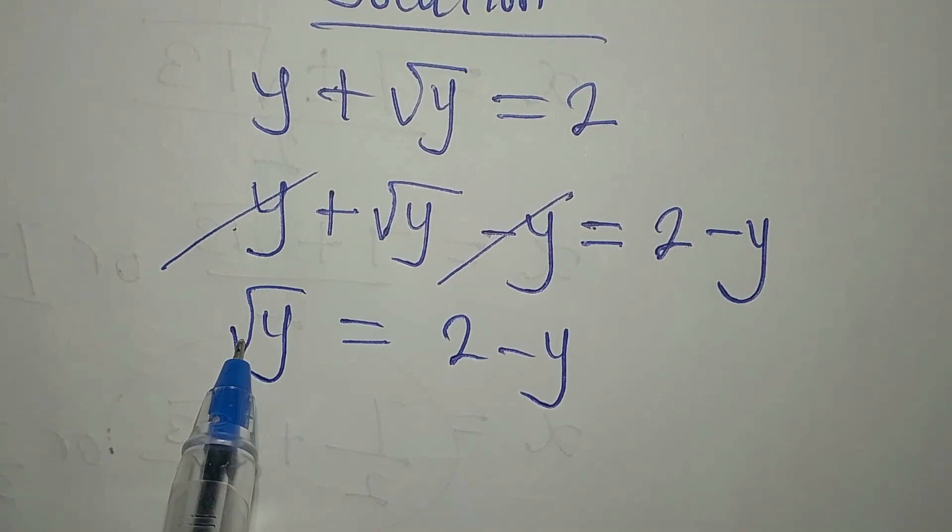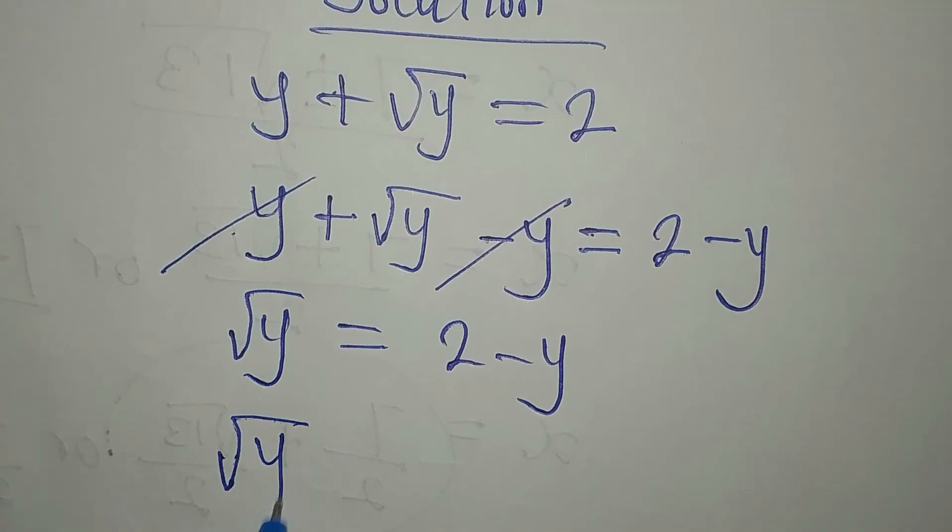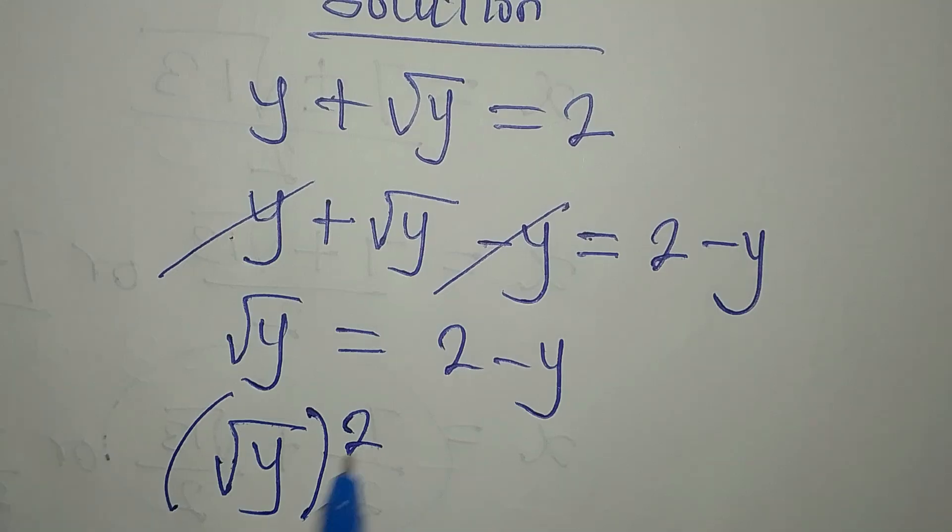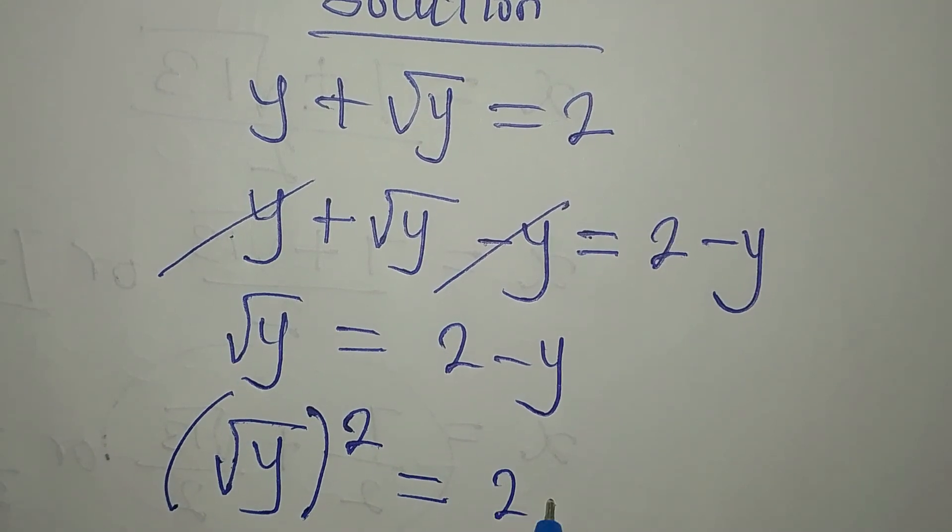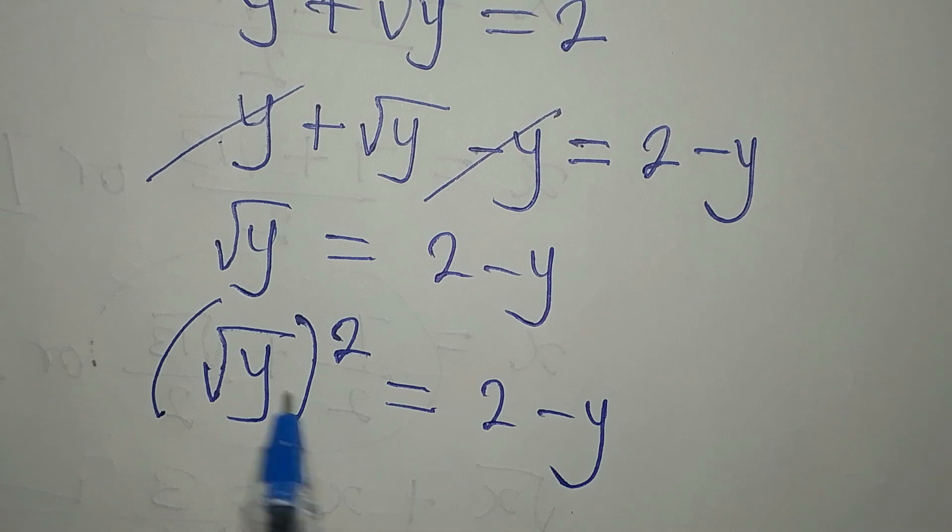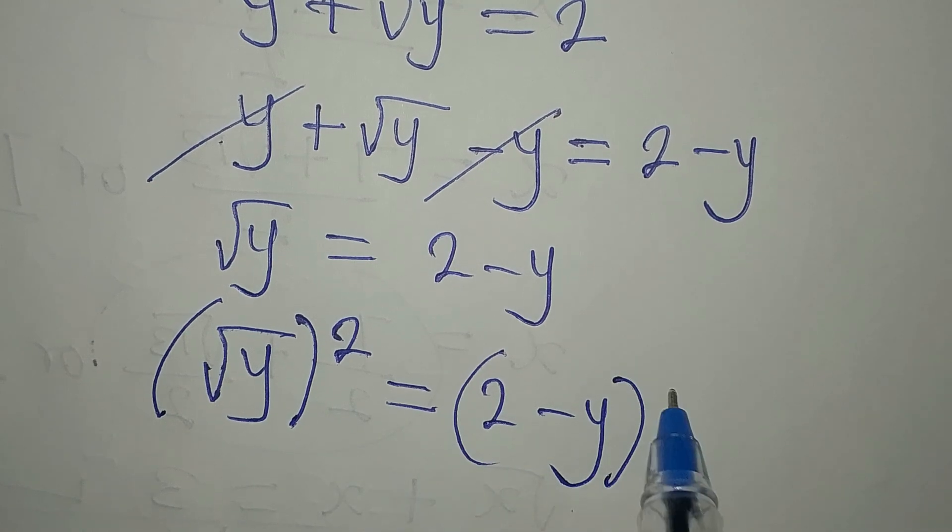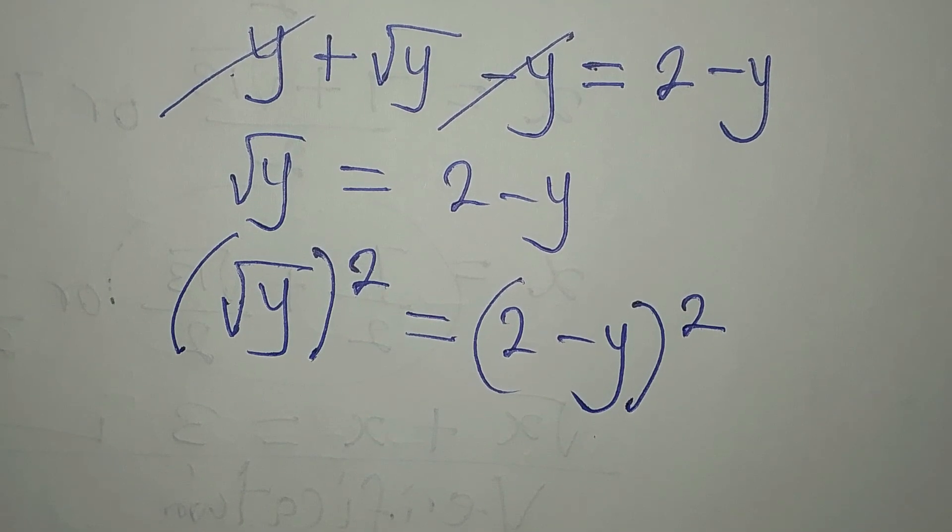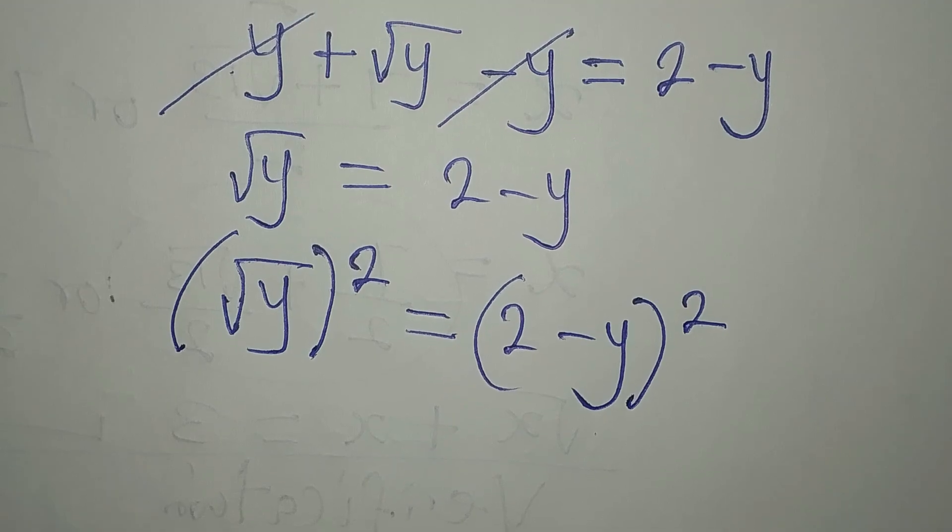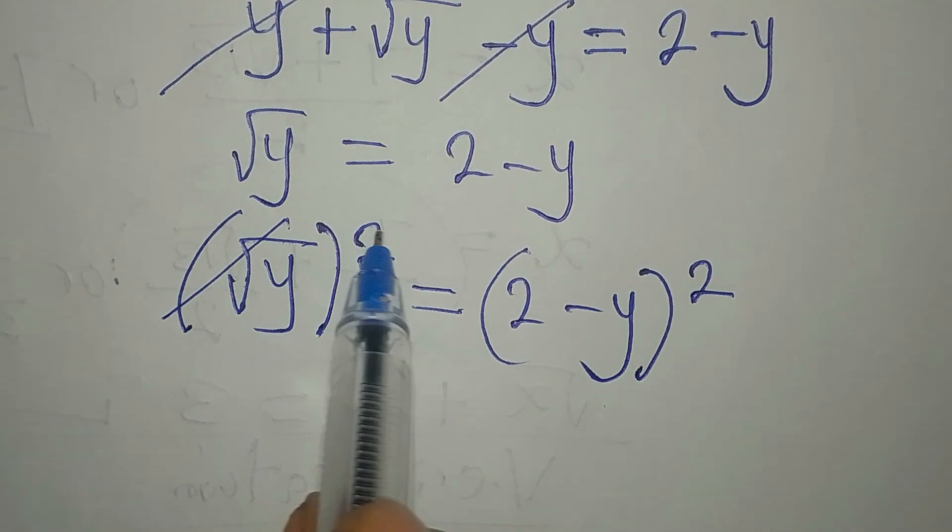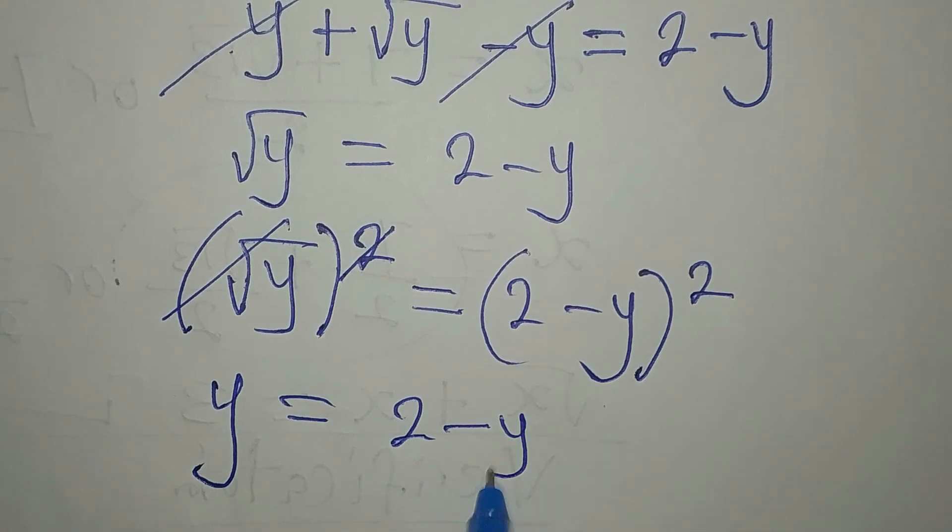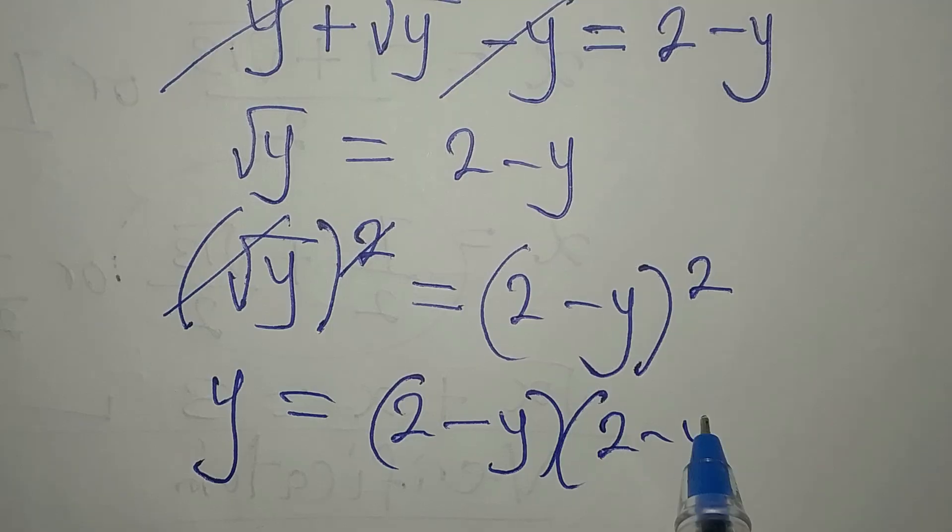So, I want to remove square root from here. I have written the square root again. So to remove that, I will have to square it. Then, I'll have 2 minus y. Since I already squared the left, I must square the right-hand side. This is going to take this away. So we have y. That is now 2 minus y into 2 minus y.